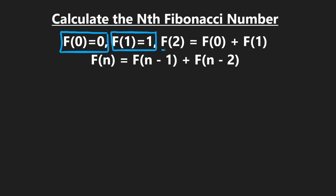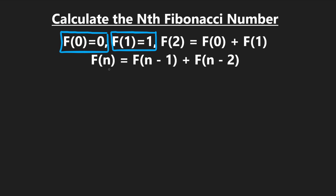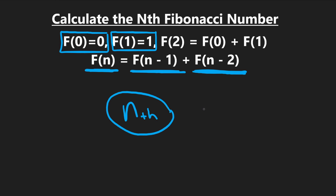The second Fibonacci number is the sum of the zeroth and the first, which are zero and one, so it equals one. The general equation is: the nth Fibonacci number equals the (n-1)th plus the (n-2)th Fibonacci number. Computing the nth Fibonacci number has many solutions, but today we're covering the recursive solution — not the most efficient, but great for learning recursion.